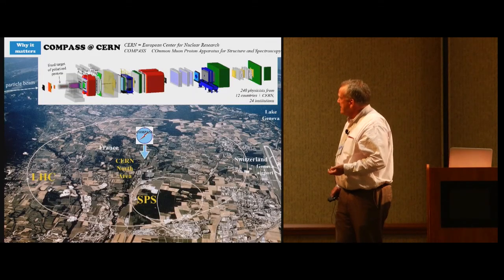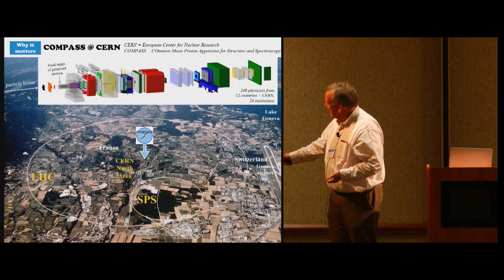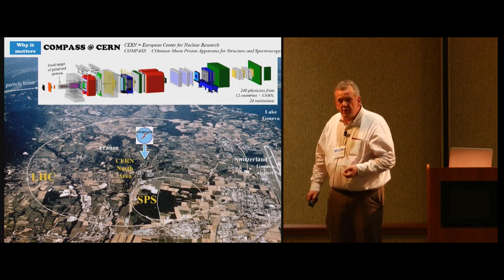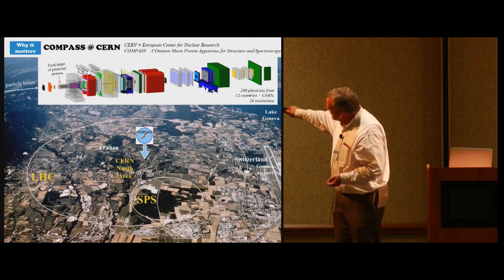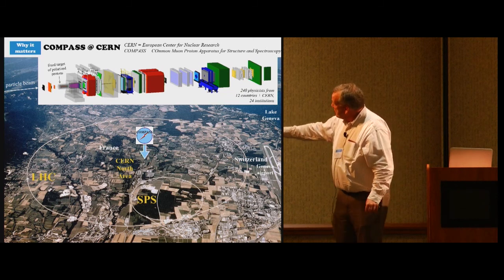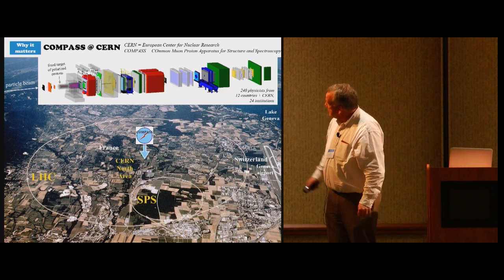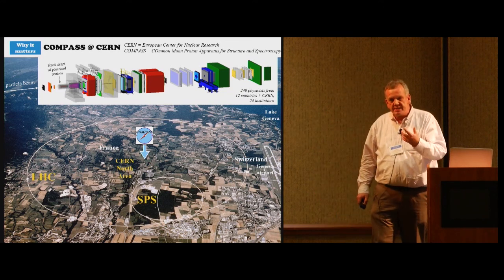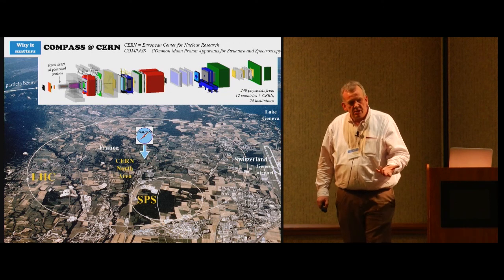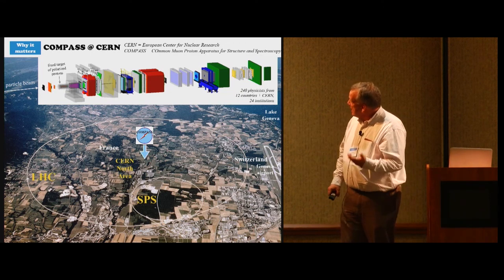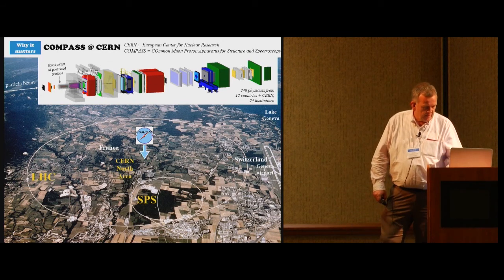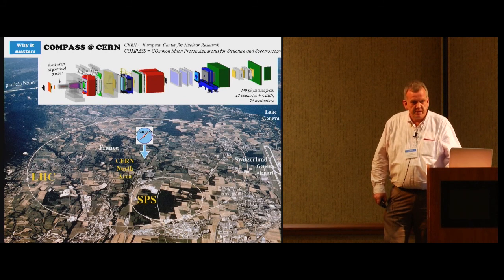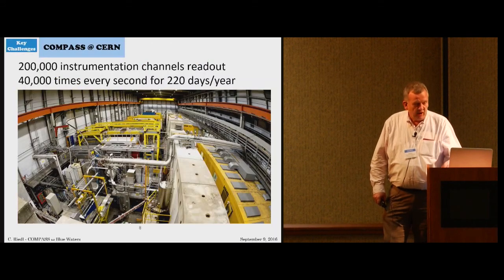COMPASS is located at CERN, which is indicated here north of Geneva in Switzerland. This is the airport. This is Lake Geneva. It is a fixed target experiment that is about 60 meters long with different instruments that aim at the detection of final state particles. It has been built and is being operated by 240 physicists from 12 countries, about 25 institutions from around the world.